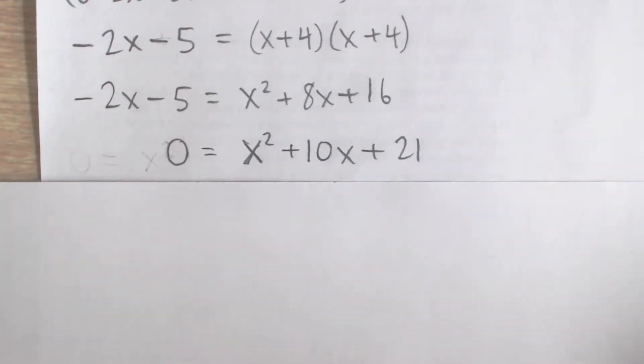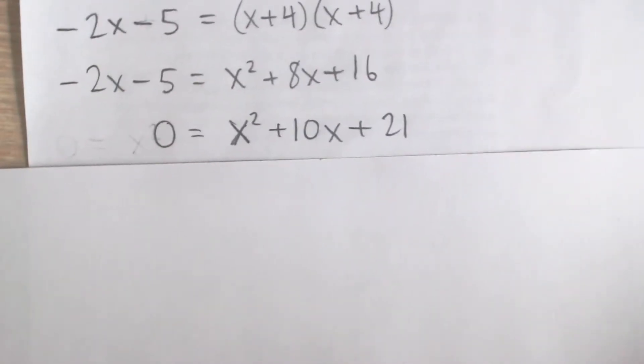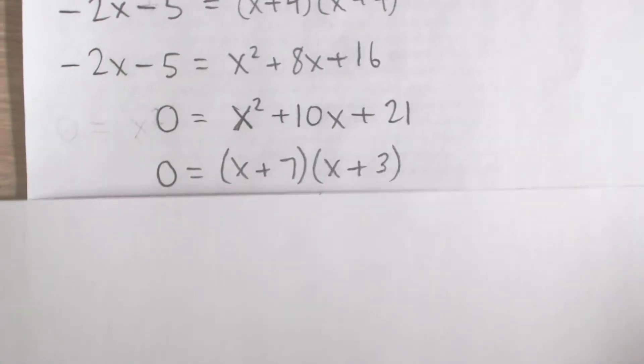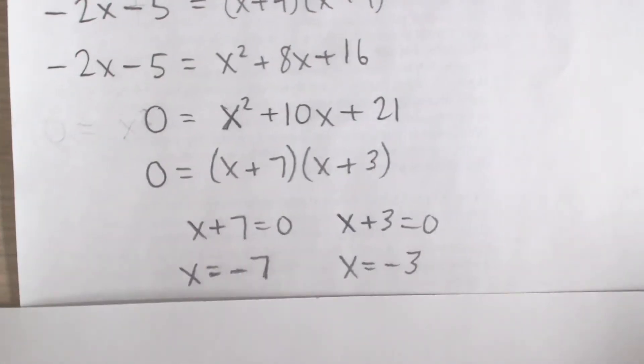If you take a look at this trinomial, you can indeed factor it into x plus 7 times x plus 3. To solve from here, each of these terms can be set equal to 0, and we solve for x. So x equals negative 7 and negative 3.